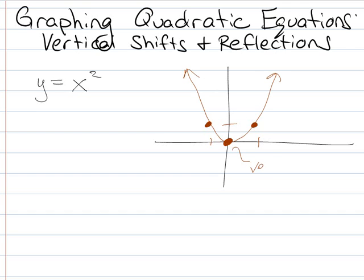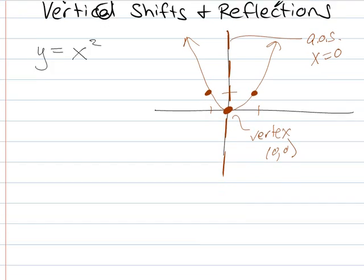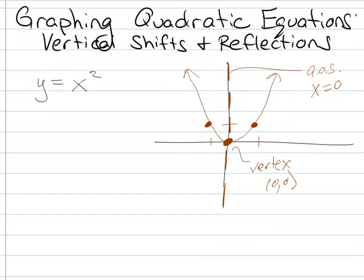So you have a vertex at 0,0, and you have an axis of symmetry, axis of symmetry at x equals 0. Keep this picture in mind as we go forward.